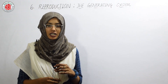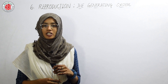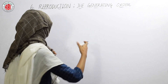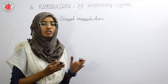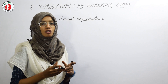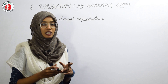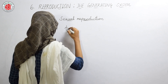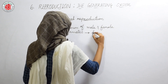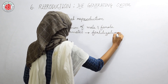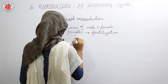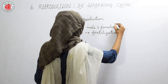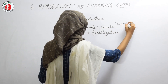Good afternoon everyone, welcome back to my class. In the previous class I explained about the asexual modes of reproduction, and today we are going to discuss about sexual reproduction. The process of sexual reproduction takes place by the fusion of male and female gametes, or reproductive cells, that gives a zygote. This fusion of male and female gametes is called fertilization.